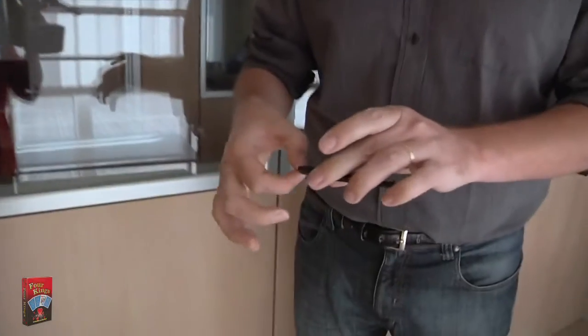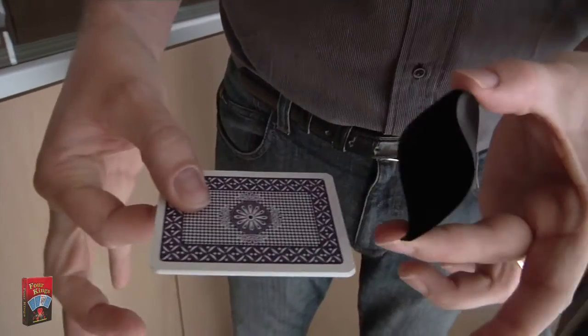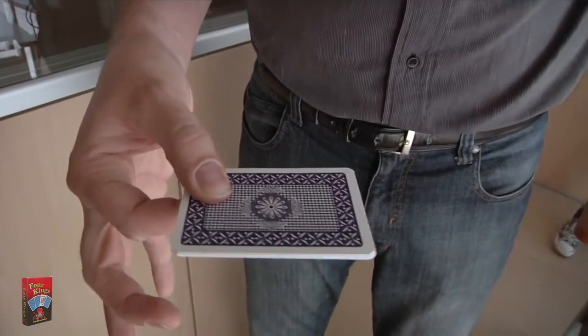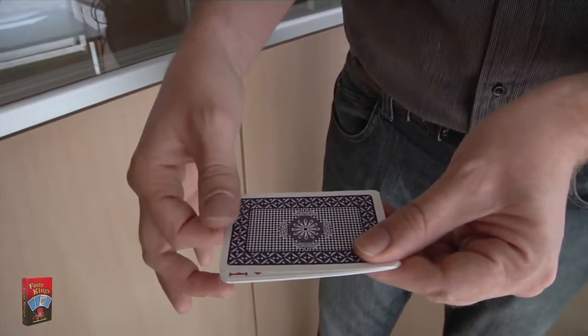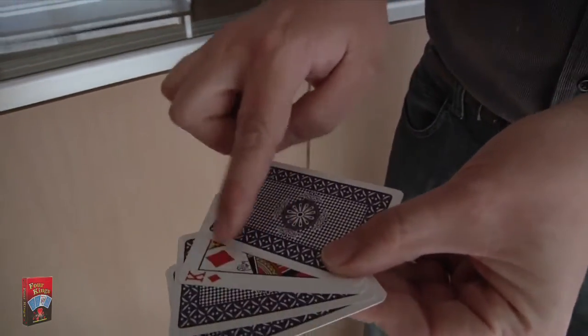Now, as I said before, inside the envelope, one king is a little bit special. And it's not any king. The king that's special is exactly your king of diamonds.